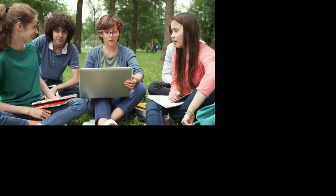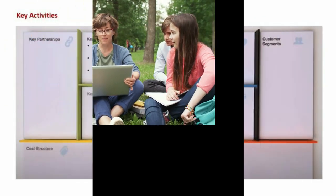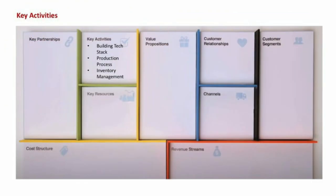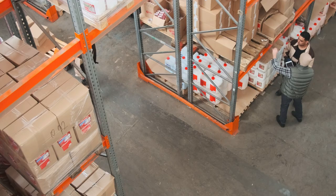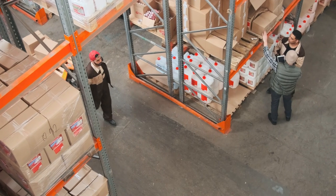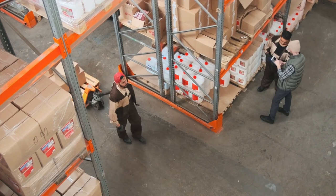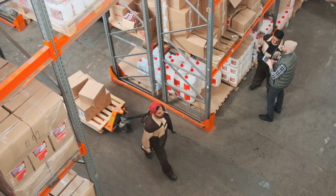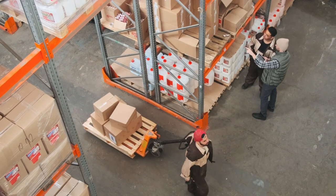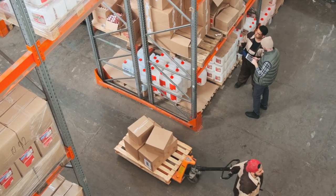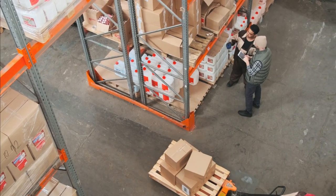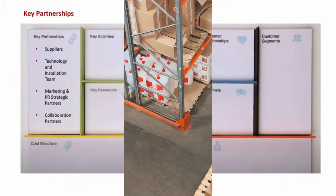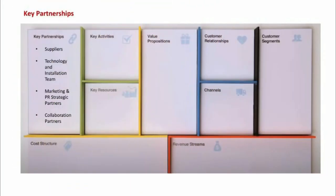Then we will talk about the key activities that will act as the backbone of our venture, like tech support and inventory management. Then we will throw some light on the key partnerships that we need to maintain to have a sustainable and profitable business model.